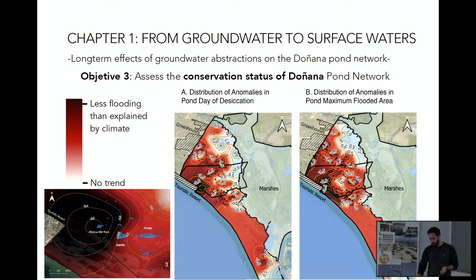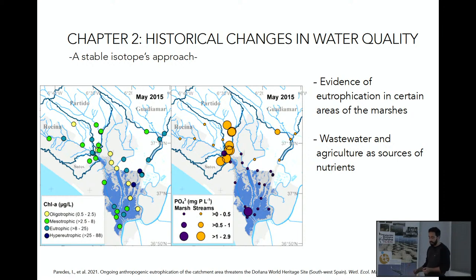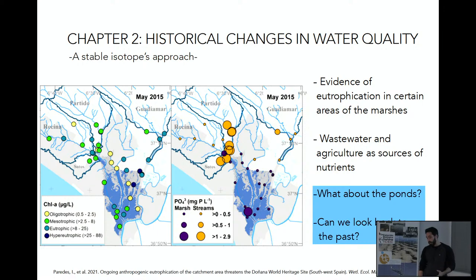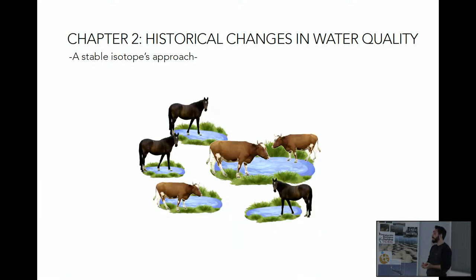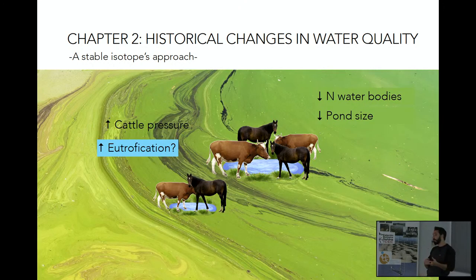Moving to the second chapter of my dissertation: assessing historical changes in water quality. There are evidences from studies by Irene Paredes that some areas of the marshes are suffering from eutrophication, and the origin of this eutrophication is clearly anthropic. We wonder what is going on with the Doñana ponds and what has happened through time. Our hypothesis is that even if the ponds have no direct entrance from streams coming from greenhouses or urban areas, the declines in the number and size of the ponds mean that cattle is exerting a higher pressure on the remnant ponds, and that could be one of the reasons why we are seeing such levels of eutrophication in ponds lately.